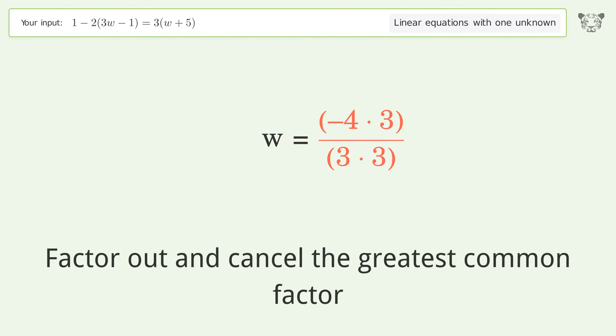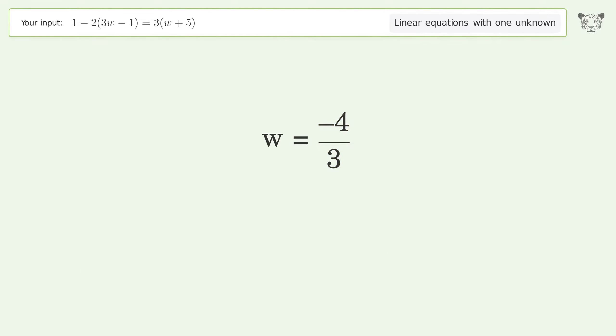Factor out and cancel the greatest common factor. And so the final result is w equals negative 4 over 3.